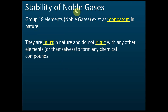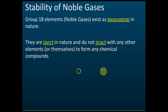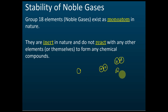In the previous chapter on periodic tables, we learned about group 1, group 17, and group 18. Group 18 is called noble gases. All group 18 elements exist as mono-atoms in nature — just one atom — unlike oxygen, hydrogen, and nitrogen, which are diatomic molecules with two atoms bonded together.